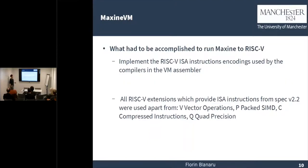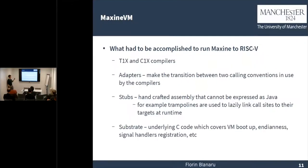What I had to do to port Maxine to RISC-V: first of all, I had to implement the RISC-V ISA instruction encodings into the VM assembler. I used all the RISC-V extensions which provide ISA instructions, apart from the vector and compressed extensions. I also had to port the Teonix and C1X compilers. Then I had to port adapters, which are pieces of handwritten assembly, because the two compilers use different calling conventions — when a Teonix-compiled method calls into a C1X-compiled method, you have to adapt between the two calling conventions in order to be able to jump to the C1X method.